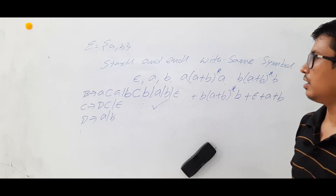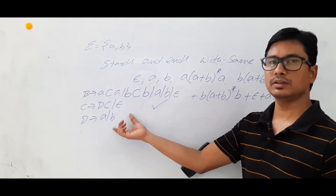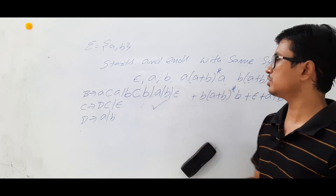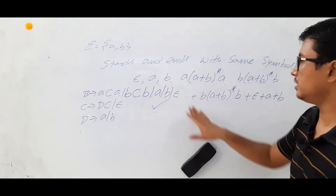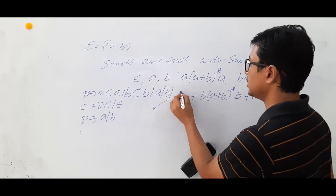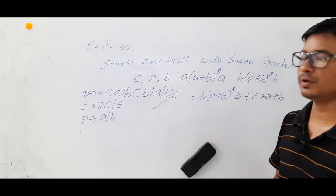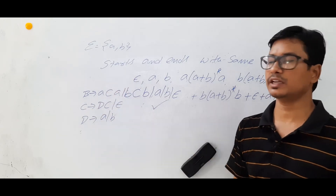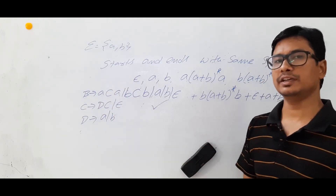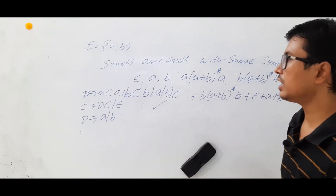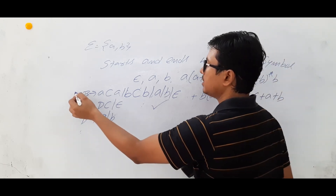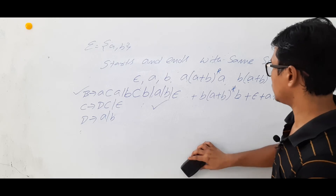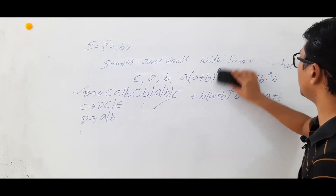This grammar can generate all strings that start and end with the same symbol. You can take a string and try to generate it using these rules — if you can generate it, the grammar is correct. The start symbol for this grammar is B.